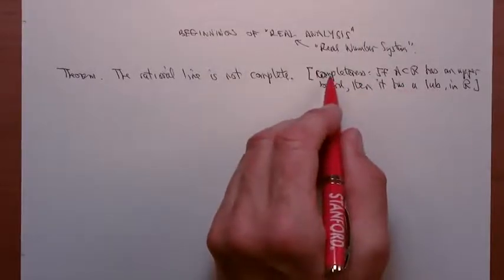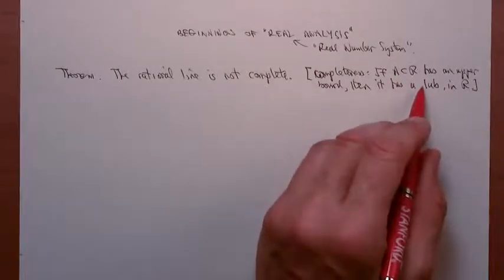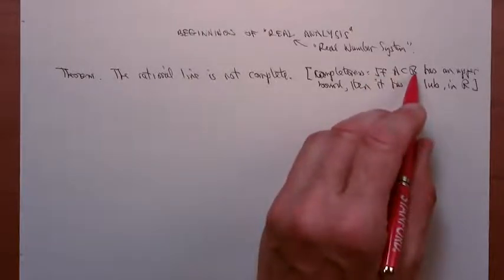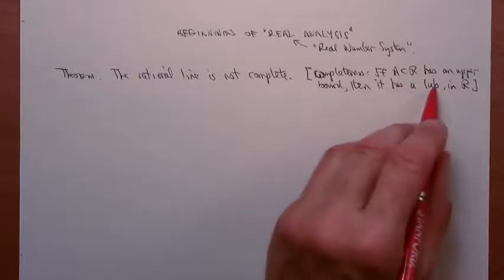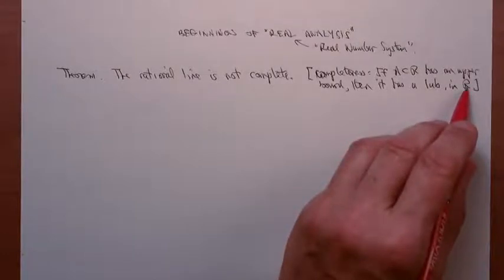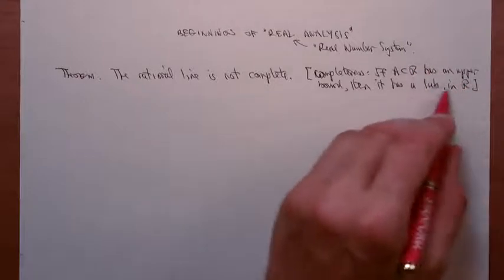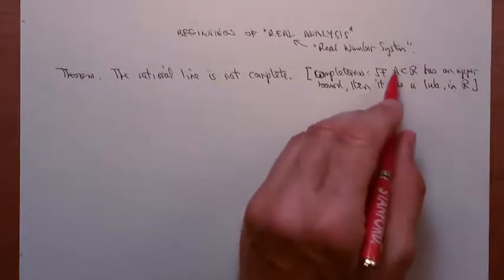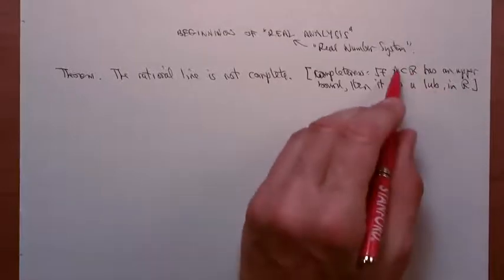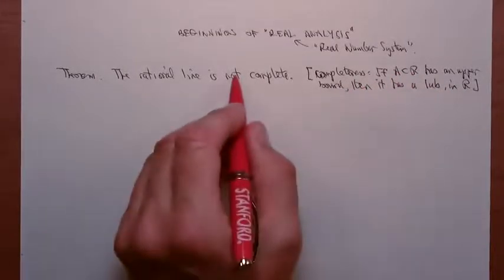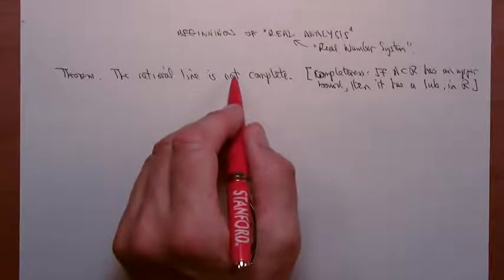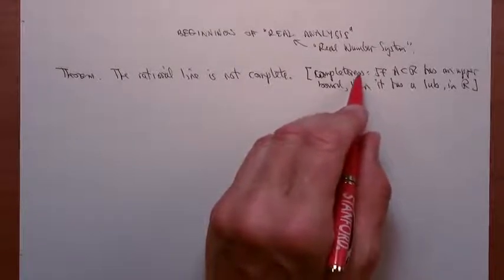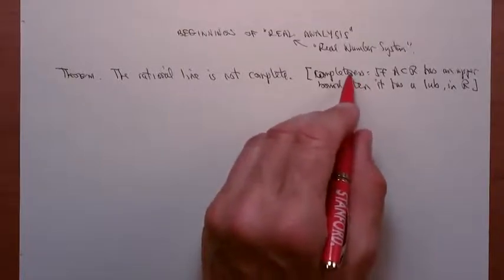These notions also apply to any set. In terms of the rationals, completeness would mean: if A is a set of rationals having an upper bound, then it has a least upper bound in the rationals. This theorem says this property does not hold for the rational numbers. It does, however, hold for the real numbers — that is the completeness property for the real line. We won't prove that, but I'll indicate how it's possible to construct the reals to make it possible to prove it.